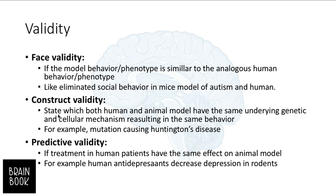Another component is construct validity. This means that both humans and the animal model share the same underlying genetic and cellular mechanisms that result in the same behavior. For example, specific mutations causing Huntington's disease occur in both species — in both humans and rodents. This is called construct validity.